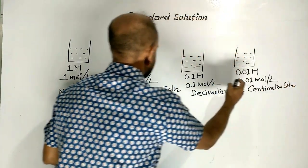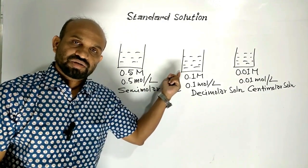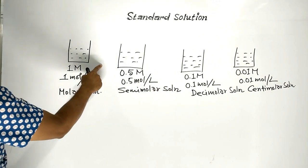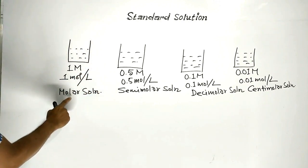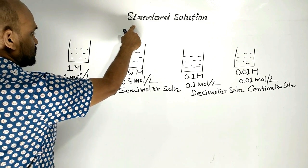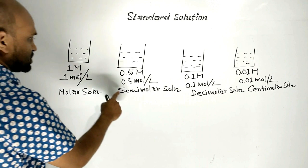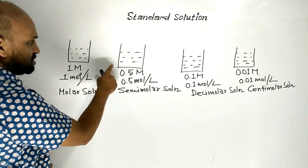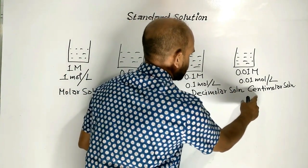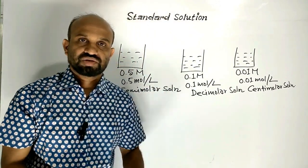So these are the solutions whose concentrations are known. The solution of primary standard substance whose concentration is known — that solution is called standard solution. So molar solution is a kind of standard solution, semi-molar solution is a kind of standard solution, decimolar solution is a kind of standard solution, and centimolar solution is a kind of standard solution, because concentrations of these solutions are known.